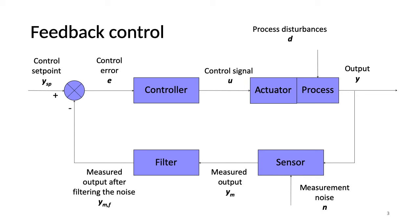Number one is the process block — a physical system that needs to be controlled using an actuator, which is also included in the process. Number two is the sensor, which measures the process variable to be controlled. Number three is the filter, which smooths out the random noise in the measurement signal. Number four is the controller, which has some program implemented within it.